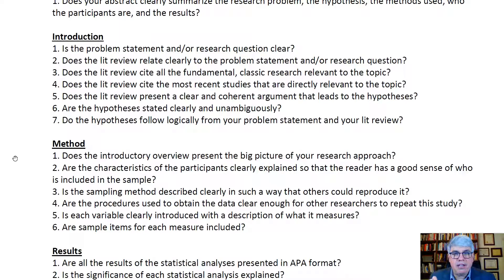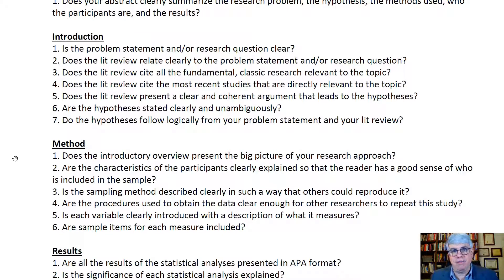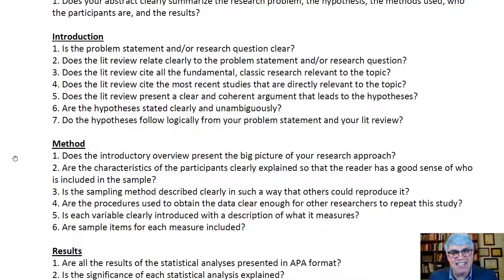Does the lit review present a clear and coherent argument that leads to the hypotheses? You're trying to write a convincing essay where the hypotheses are the conclusions. When you form the hypotheses, are they stated clearly and unambiguously so we know exactly what the hypothesis and null hypothesis are? Do the hypotheses follow logically from your problem statement and lit review? If you're just pulling them out of the air, that's not convincing. They need to flow logically and, if true, present at least part of the solution to the research problem.